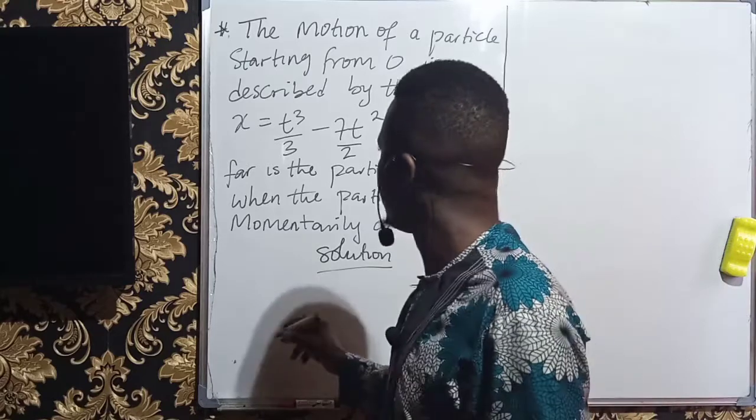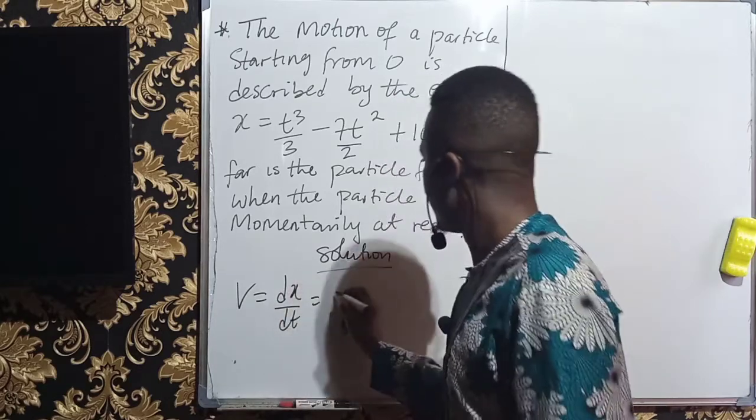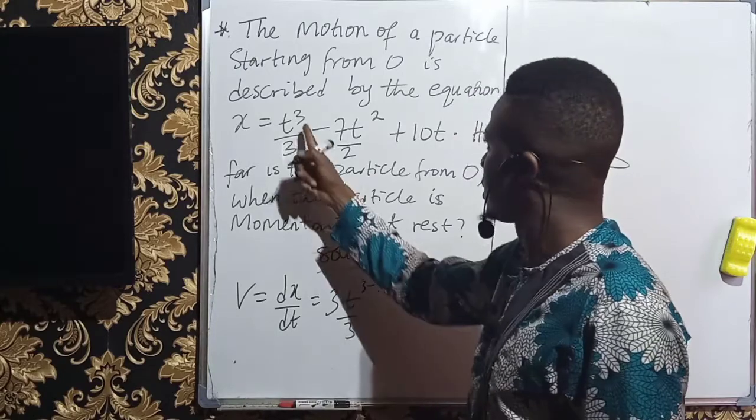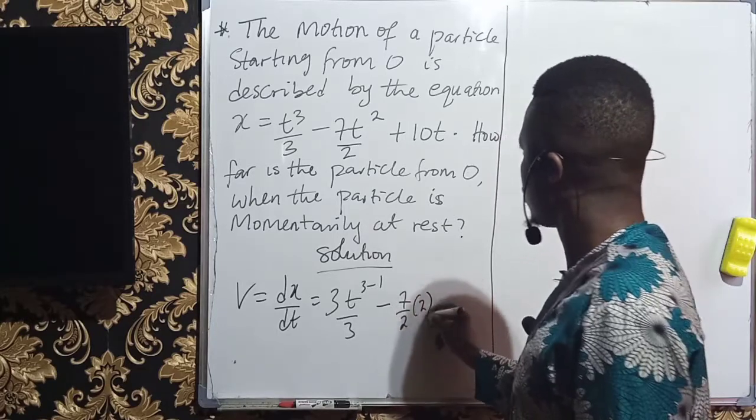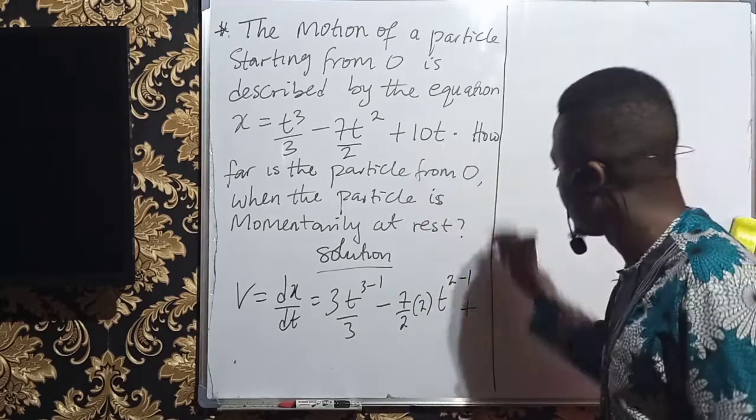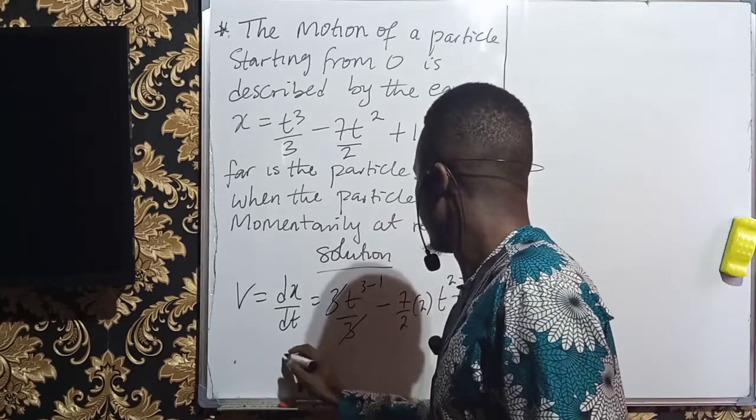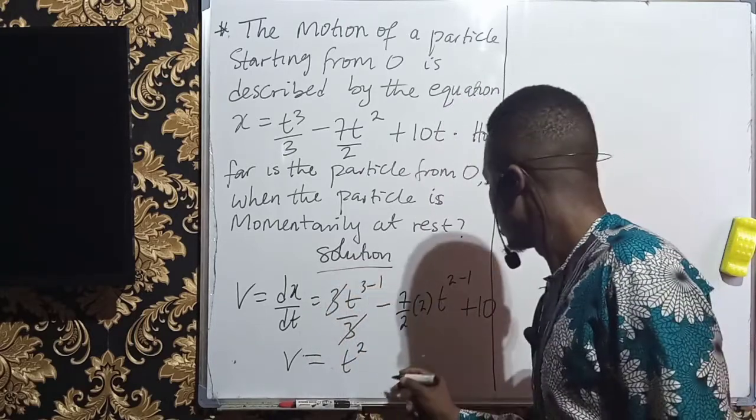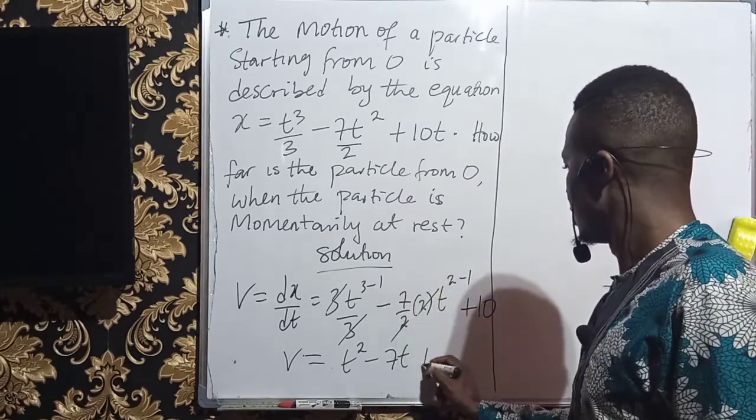So I have that my velocity is equal to dx over dt, which will give me 3 coming to the back, t over 3, then 3 minus 1, minus 7 over 2. The 2 will come to the back, t, 2 minus 1, plus whenever I differentiate this without the power, I will get just 10. Now this 3 will cancel this 3, which I have our velocity as t power of 2. 2 will cancel, I will have minus 7t, plus 10.